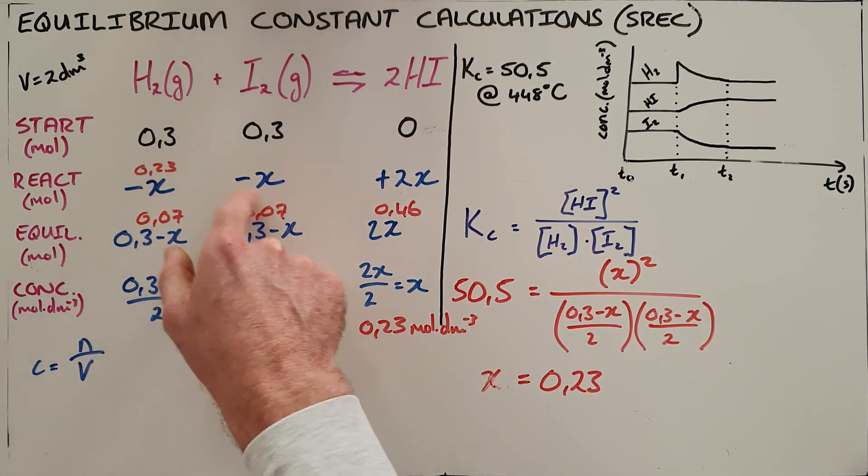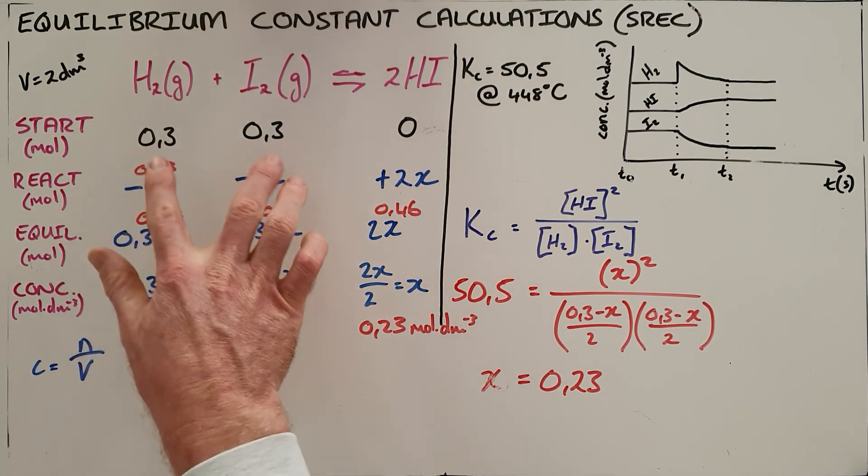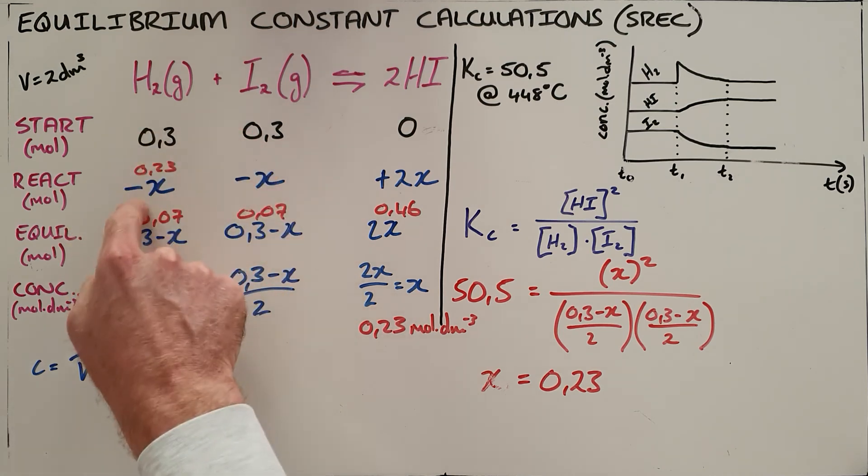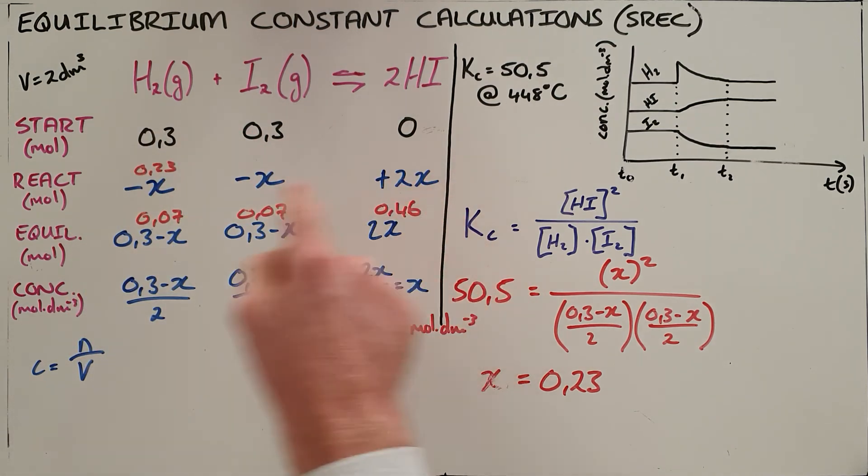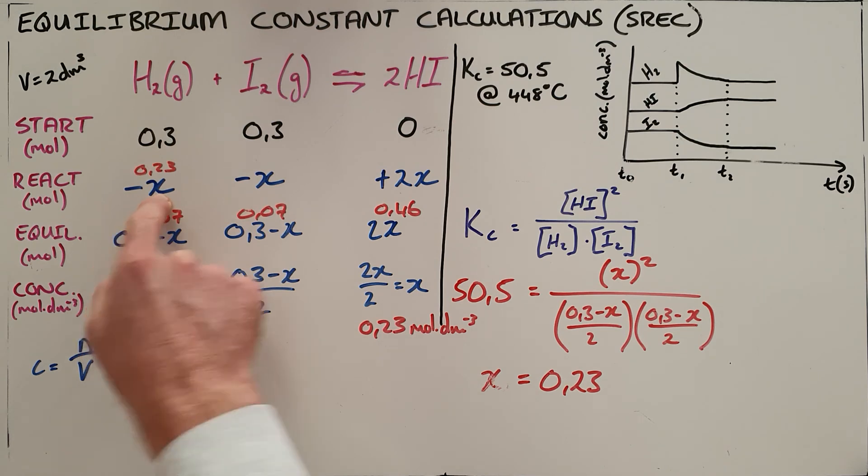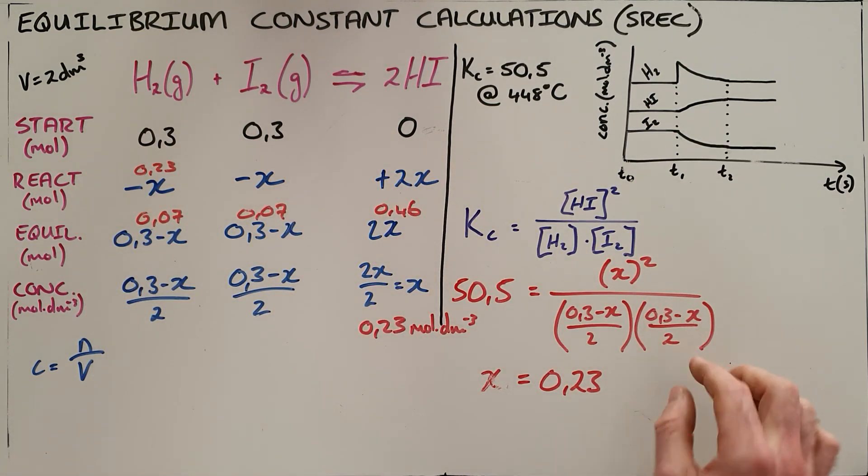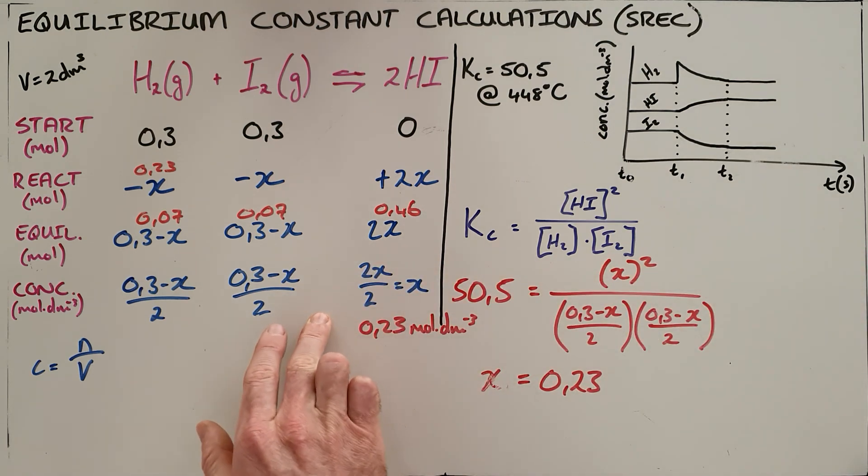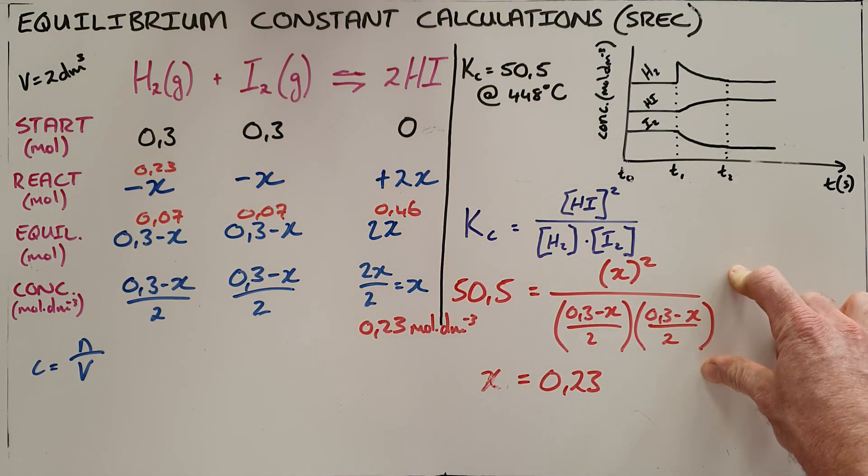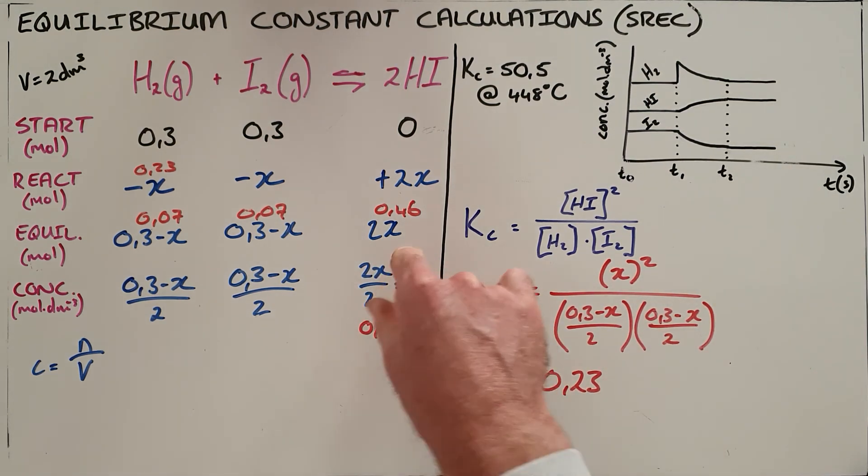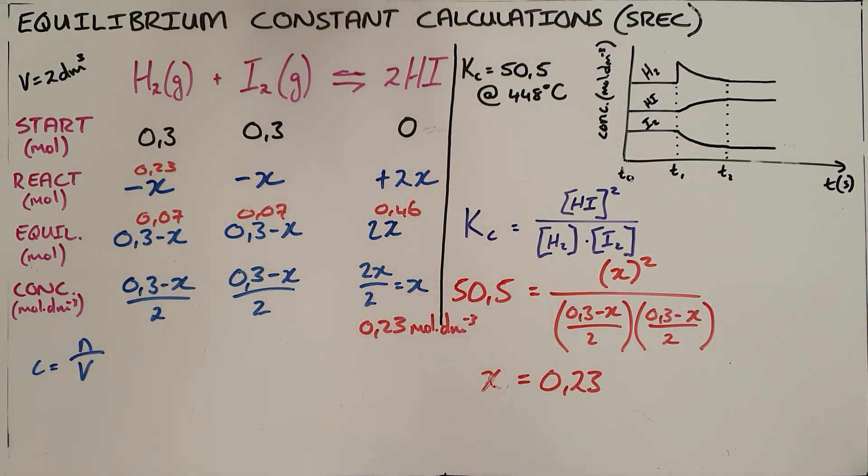Since the ratio of hydrogen to hydrogen iodide is 1:2, if we lose X moles here, we produce 2X moles there. We substitute these concentration values into our Kc expression, which allows us to solve for X and answer the questions.